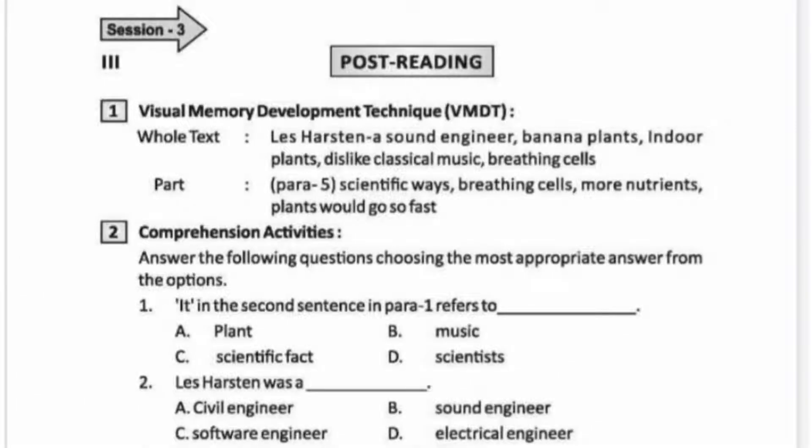Music helps plants grow — raw post-reading. Question 1: In the second sentence in paragraph 1, 'it' refers to this: plant, scientific fact, music, scientist. The correct answer is Music.